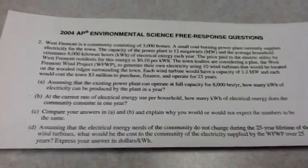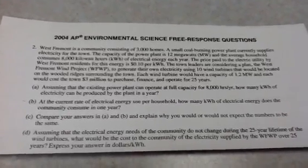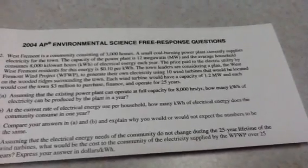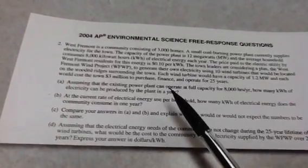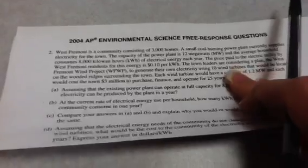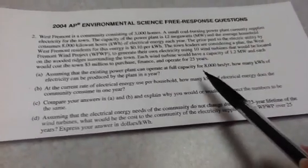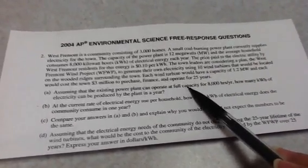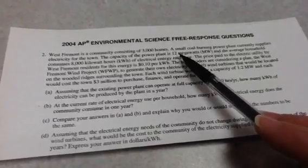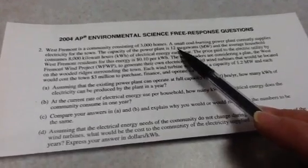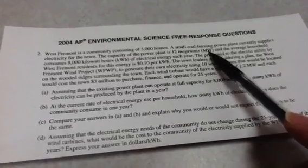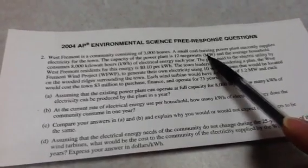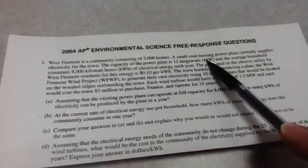So on A, assuming that the existing power plant can operate at full capacity for 8,000 hours per year, how many kilowatt hours of electricity can be produced by the plant? So I do need to go ahead and look at what full capacity was. If you look back up here, it was 12 megawatts. And that doesn't really have anything with it. It doesn't have another unit paired with it. So that doesn't have a buddy. So I'm going to start here, and I'm going to solve for kilowatt hours. Let's get started.